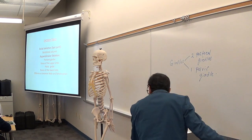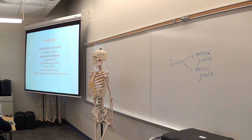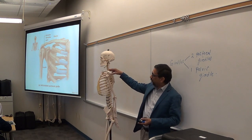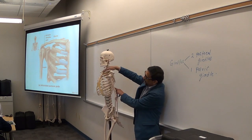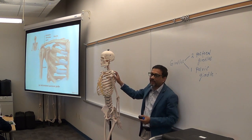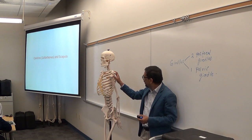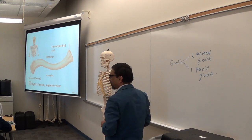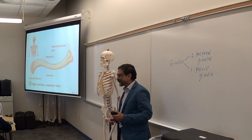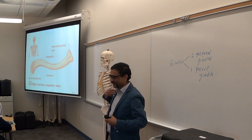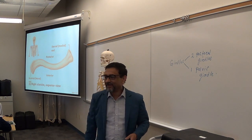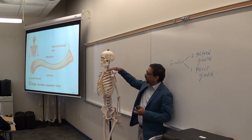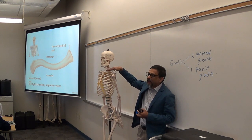The pectoral girdle consists of the clavicle and scapula. The clavicle is also known as the collar bone — in females, sometimes called the beauty bone. It is a long bone which is placed horizontally, unlike most long bones which are vertical.